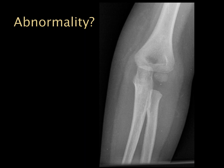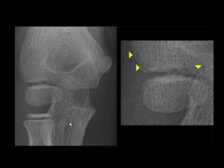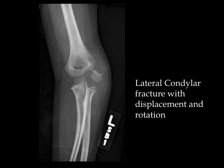The abnormality on this x-ray — which may be a little subtle — is a lateral condylar fracture. Here are zoomed-up views of another lateral condylar fracture. In a more extreme version, we actually get displacement of the condyle itself as well as rotation.